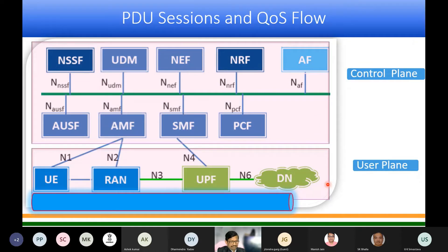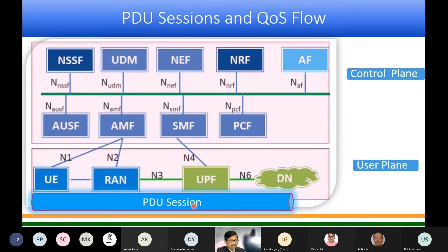Traffic flows on the user plane are called PDU (Protocol Data Unit) sessions. When a UE registers on the network, a PDU session is created and all data flows happen within that PDU session. We will discuss how PDU sessions are established and how quality of service is maintained within them. Before that, let us briefly cover the functions of the key network elements.